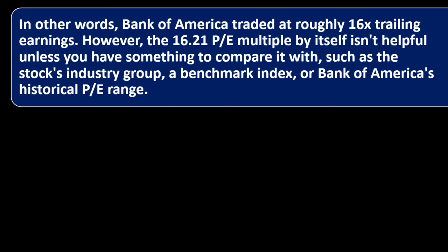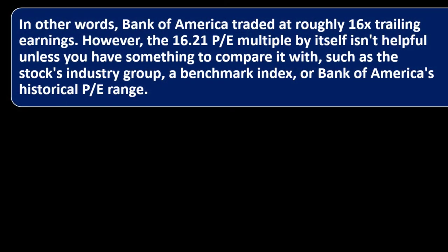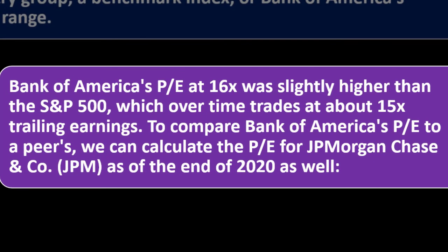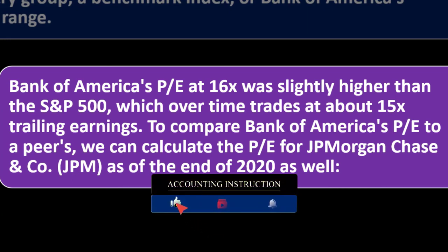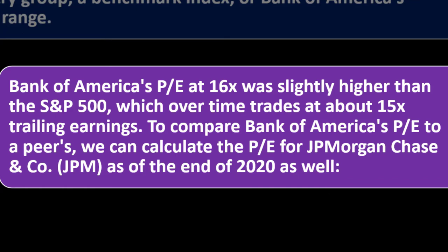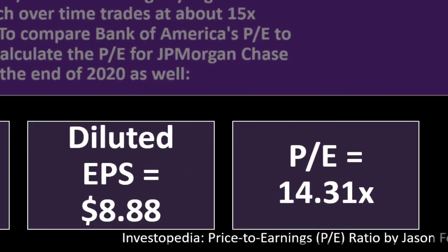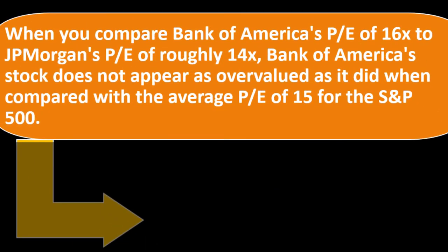However, the 16.21 PE multiple isn't helpful unless you have something to compare it with — such as other stocks, an industry group, or a benchmark index, or Bank of America's own historical PE. Bank of America's PE at 16x was slightly higher than the S&P 500, which over time trades at about 15x trailing earnings. To compare, we can calculate the PE for JPMorgan Chase (JPM) at the end of 2020: stock price $127.07, diluted EPS $8.88, giving a PE of 14.31x.